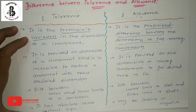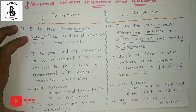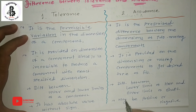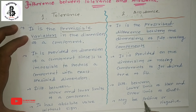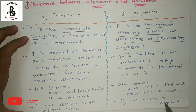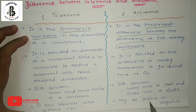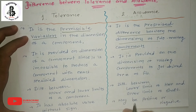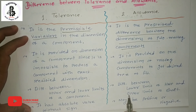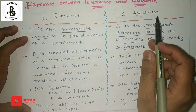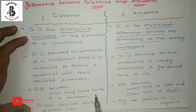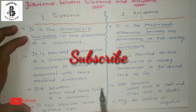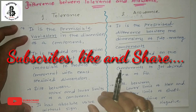The last point: tolerance has an absolute value without sign, whereas allowance may be positive or negative. If there is a clearance fit, that is a positive allowance; if there is an interference fit, that is a negative allowance. That covers the important part of measurement science — the basic difference between tolerance and allowance. If you like this, please subscribe and share. Thank you very much.